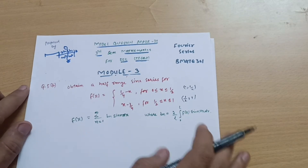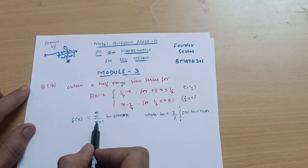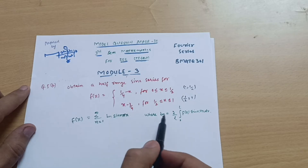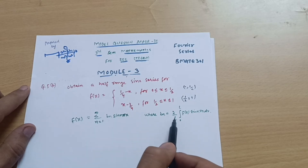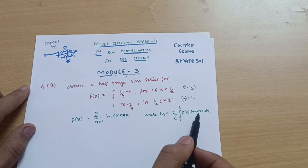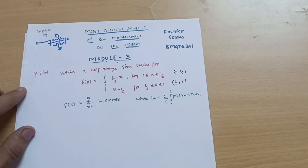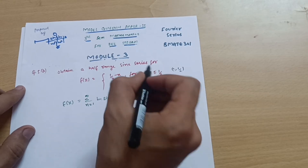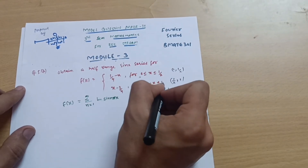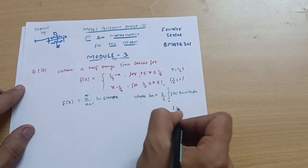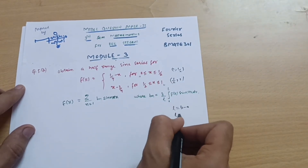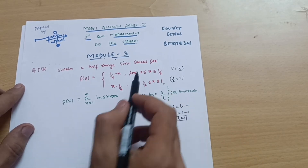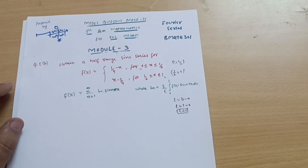The general formula for the half range sine series is f(x) = Σ bn·sin(nπx), where bn is the Fourier coefficient given by bn = (2/l)∫₀ˡ f(x)·sin(nπx) dx. Here, l is the final interval minus the initial interval, so l = 1 − 0 = 1.